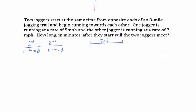Two joggers start at the same time from opposite ends of an 8-mile jogging trail and begin running towards each other. One jogger is running at a rate of 5 miles an hour. The other jogger is running at a rate of 7 miles an hour. How long in minutes after they start will the two joggers meet?